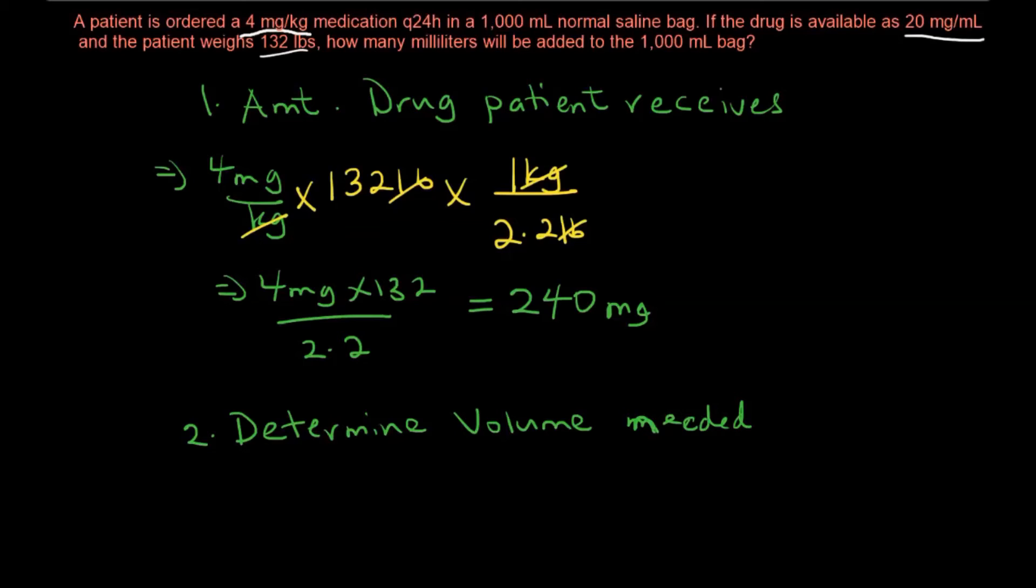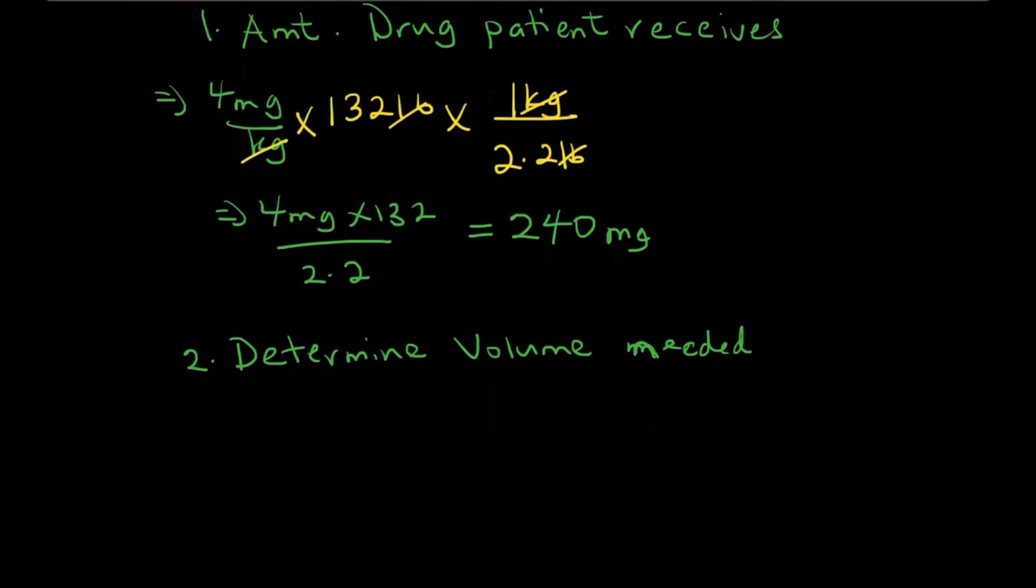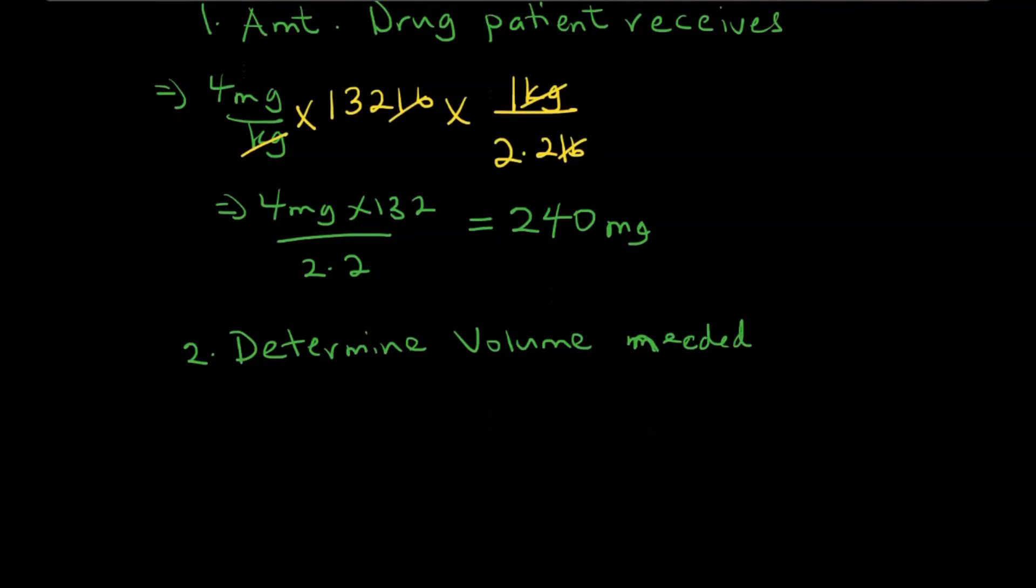The way we will do that is basically to take the concentration that we have. We know 20 mg is in 1 ml, so what that means is each milliliter will contain 20 mg, and we want to supply 240 mg. So we can solve for x.